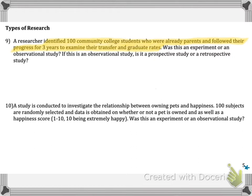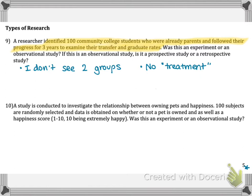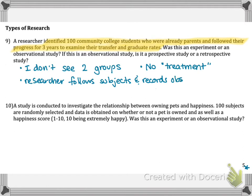One of the key giveaways here is that I don't see two groups. When you read through this example, it is not clear that these people have been divided into two groups. There's also no treatment or variable that is being changed — there's nothing mentioned here that is changed by the researcher. This researcher simply follows the students and records their observations. So, this would be considered an observational study.